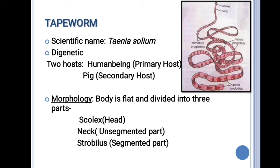This worm is digenetic as it completes its life cycle in two hosts — the human being and the pig. The human being acts as the primary host and the pig acts as the secondary host. The criteria is that whichever host in which sexual reproduction of the parasite is completed becomes the primary host. This worm completes sexual reproduction in humans, so humans are the primary host.